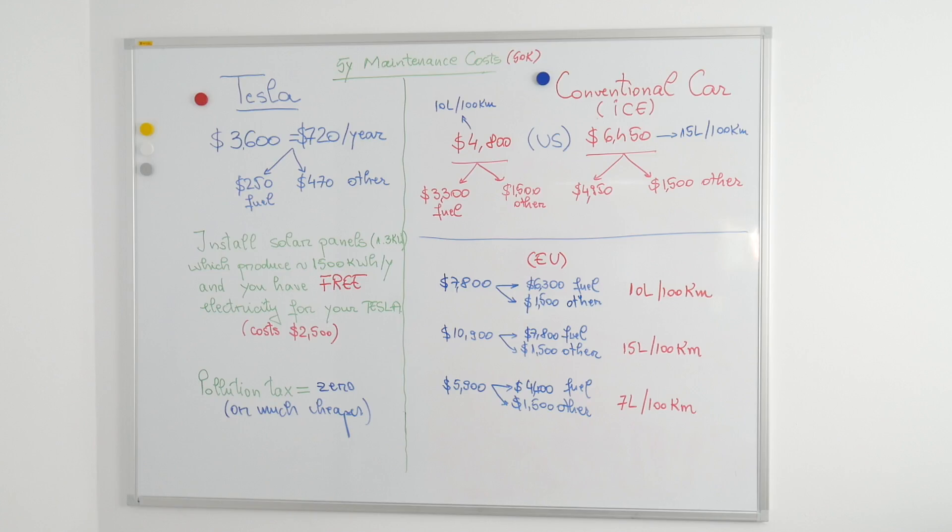So in Europe, the conventional car would cost you around $1560 per year, or $7800 in 5 years.